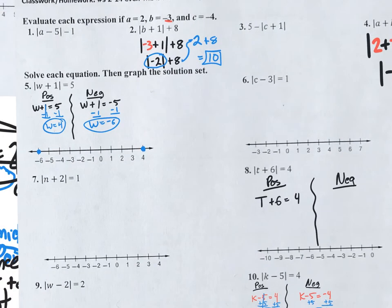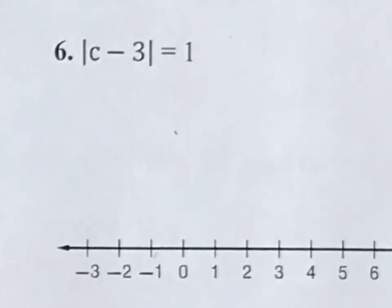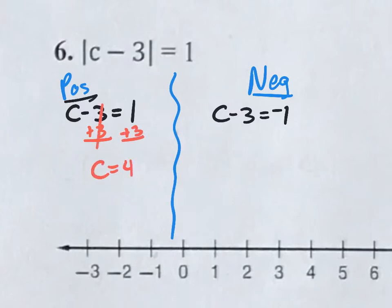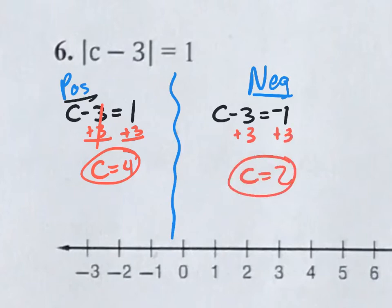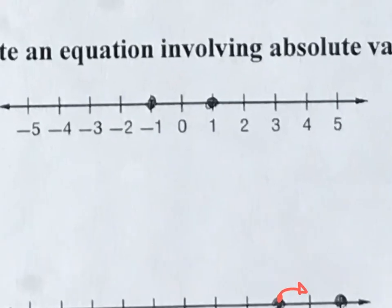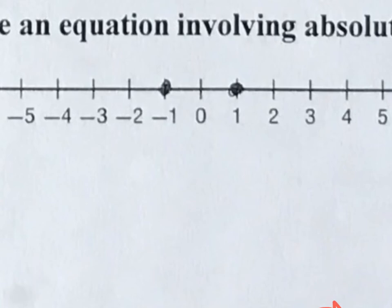Let's try number six — you want to solve it. Do the positive and the negative situation. For the positive situation: c minus three equals one. For the negative situation: c minus three equals negative one. Solve both: plus three on each side gives c equals four and c equals two. Those are your answers. The worksheet wants you to plot four and two on the number line, so you get used to those number lines for when you're working with the equations.